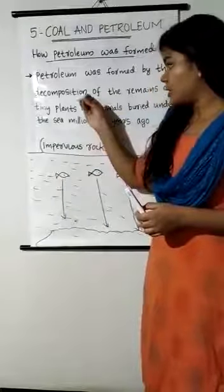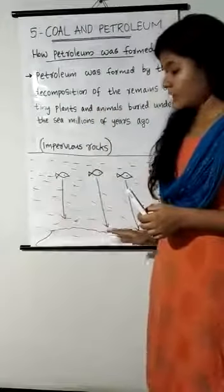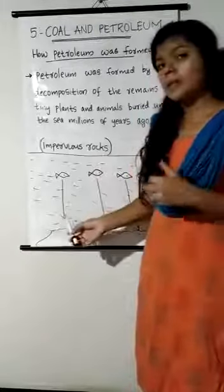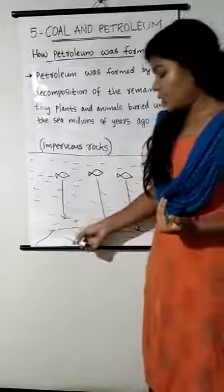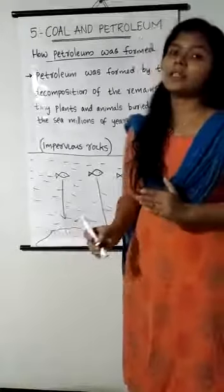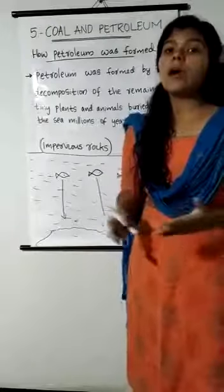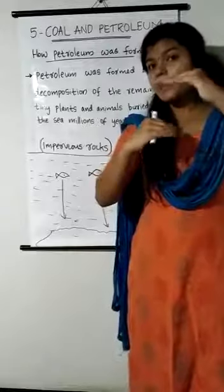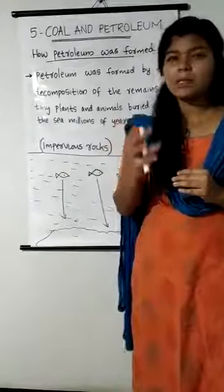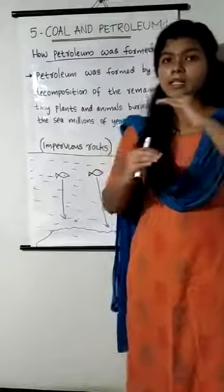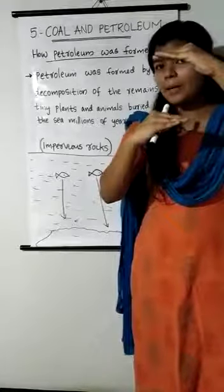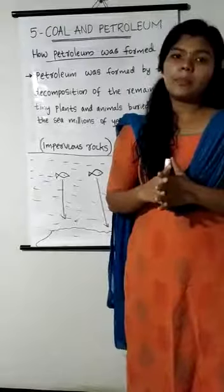The dead remains of sea creatures settled down at the bottom of the sea or ocean and gradually got covered by mud, soil, and clay. Over millions of years, due to high temperature, pressure, and the absence of air, these dead remains gradually converted into petroleum. The petroleum thus formed is trapped between two layers of impervious rocks — impervious means non-porous, that is, rocks with no holes — thereby forming oil deposits.